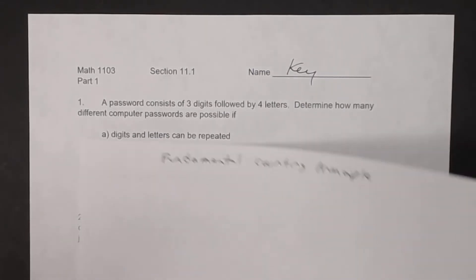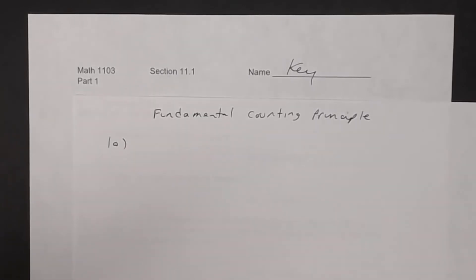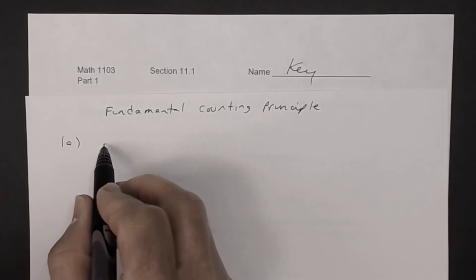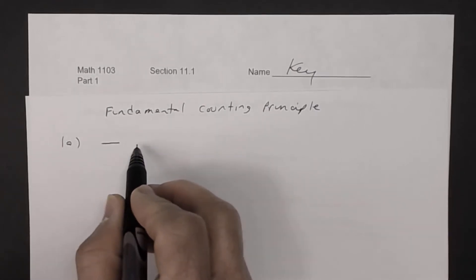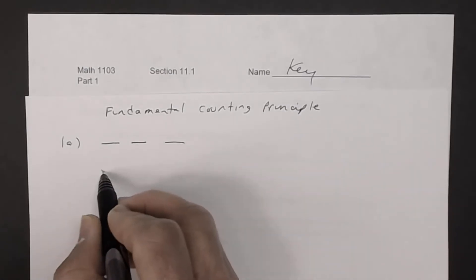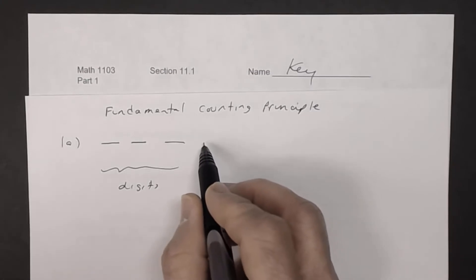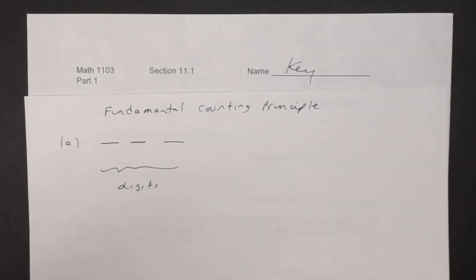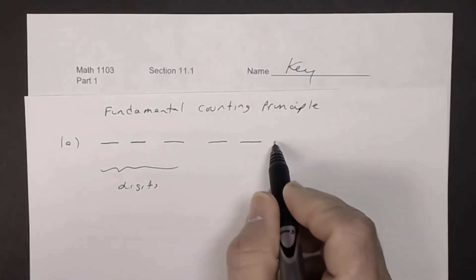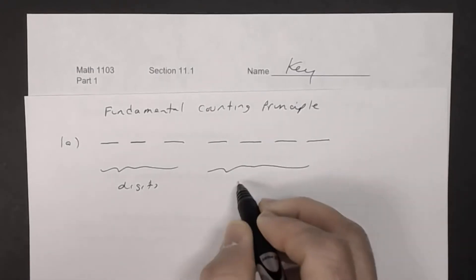In 1A, you have a combination that consists of three digits followed by four letters. So you have the first, second, and third being digits. And then the following four are letters — a letter combination for each of the four positions.